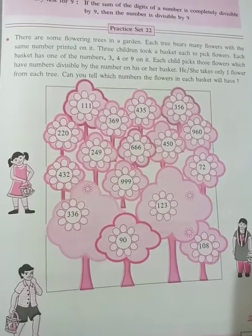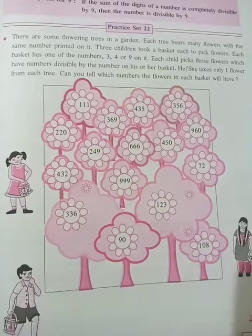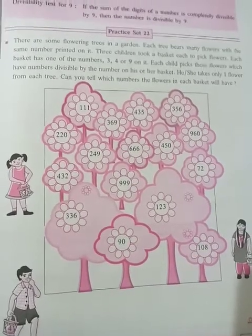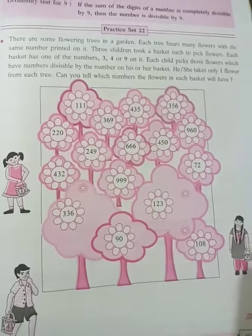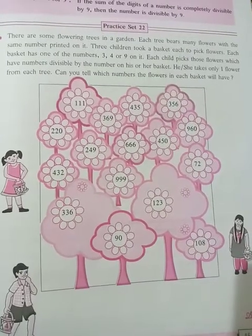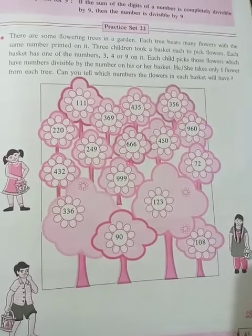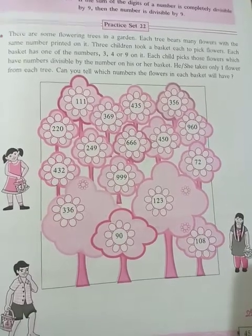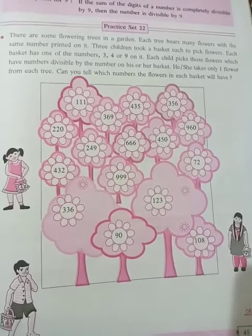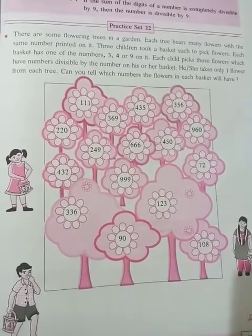Three children took a basket. Each basket has one of the numbers 3, 4, or 9 on it. Each child picks those flowers which have a number divisible by the number on his or her basket. He or she takes only one flower from each tree. Can you tell which numbers the flowers in each basket will have?